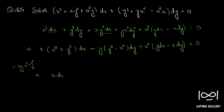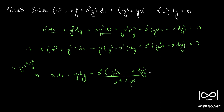we have x dx plus y dy plus a square into y dx minus x dy divided by x square plus y square equal to 0. Now every part is integrable. If you remember the list shown at the beginning of this section, you can see this is the form of d of tan inverse x by y.